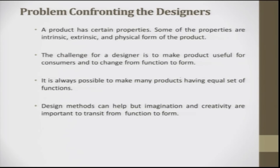The product has certain properties. It has to be functionally good, it has to have quality, it has to be reliable, it has to be economical. Some of these properties are intrinsic, some are extrinsic, and there is the physical form of the product. These are the three categories: intrinsic property, extrinsic property, and physical form of the product.